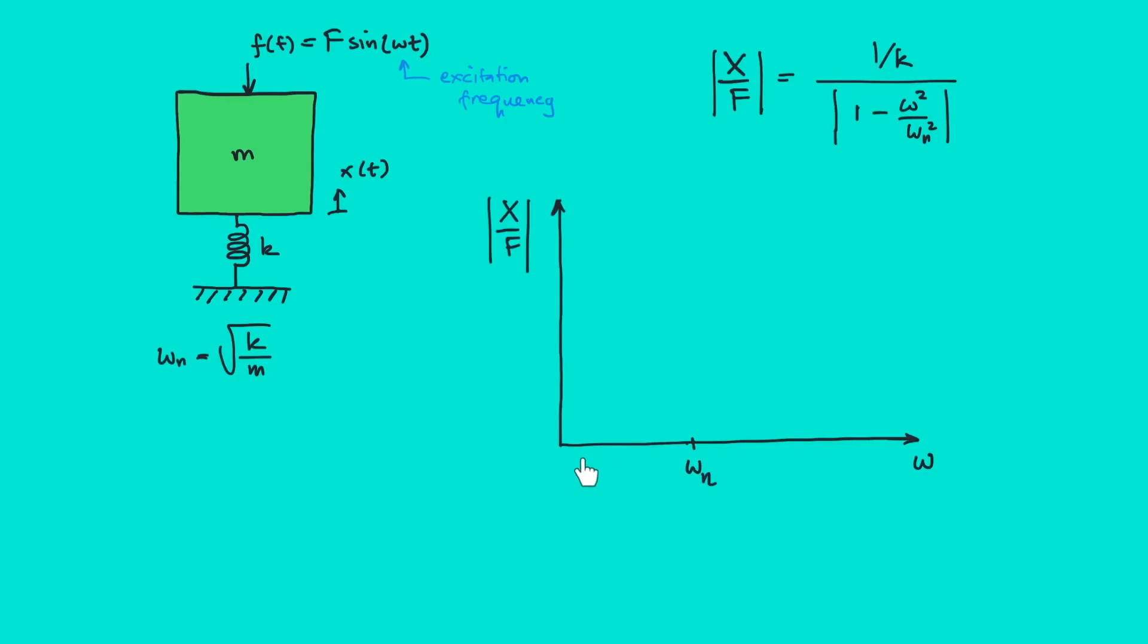The first one is when the excitation frequency is much lower than ωₙ. The second one is when the frequency is very close or equal to ωₙ. And the third one is when the frequency is much higher than ωₙ.